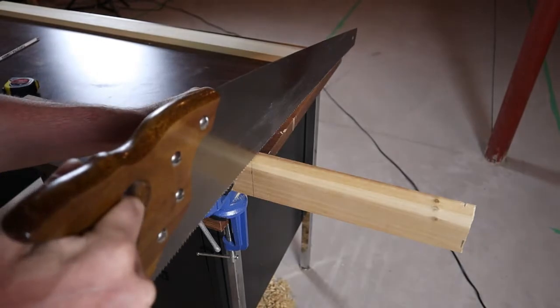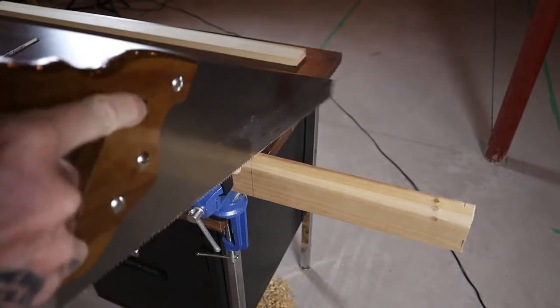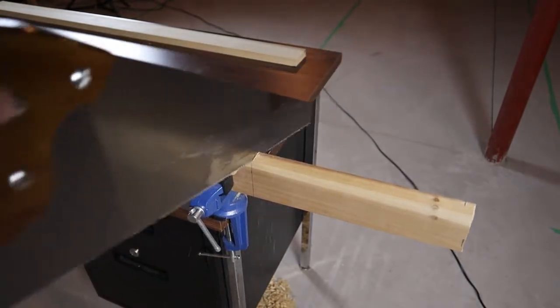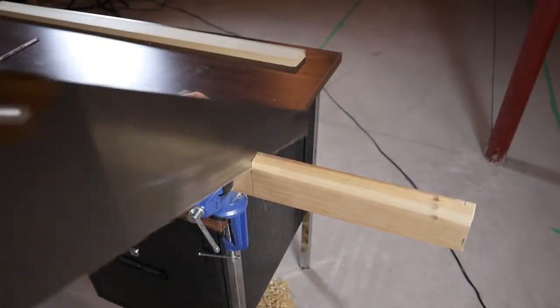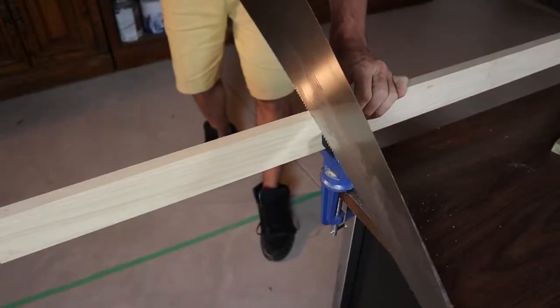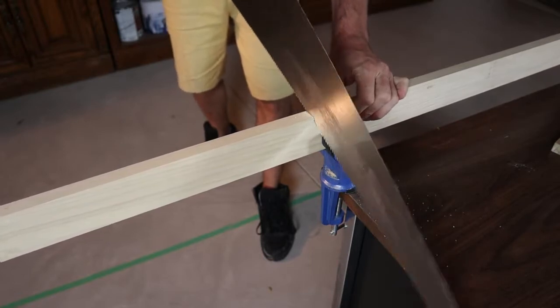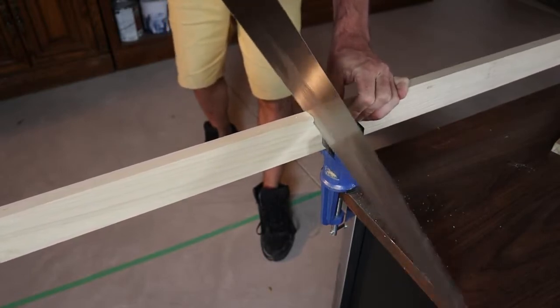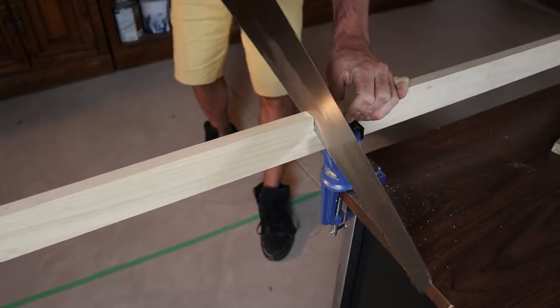So we'll go ahead and get the two uprights of the triangle cut off. Also, if you happen to have a miter box, that would be another good way to get these 90 degree cuts really straight and perfect. But like I said, the way I'm doing this we're not using any power tools.